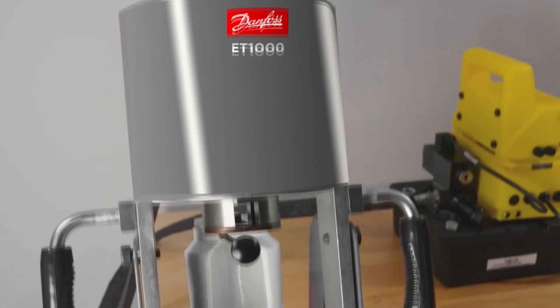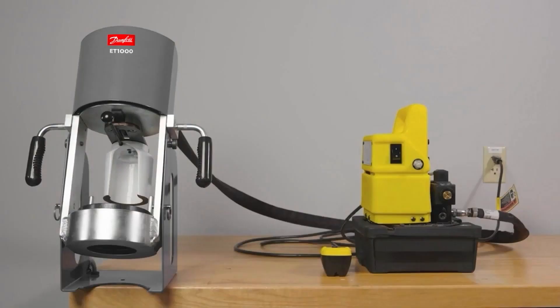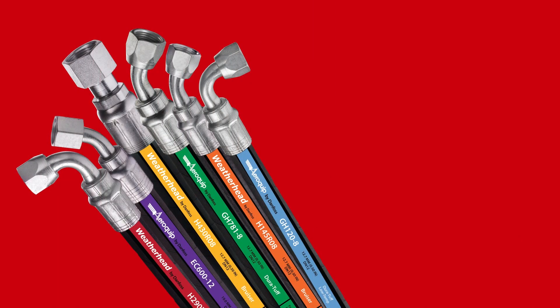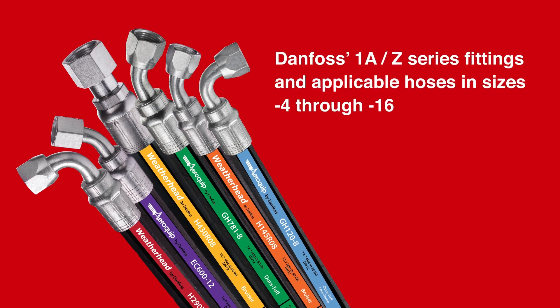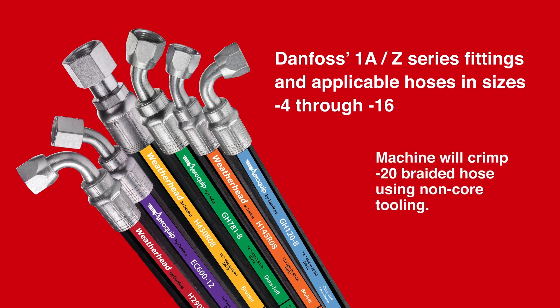Danfoss presents the ET-1000 crimp machine, our most portable positive stop style crimp machine. It can be mounted to surface vehicles for easy transport between job sites. The ET-1000 is approved to crimp Danfoss's 1A and Z series fittings and applicable hoses.